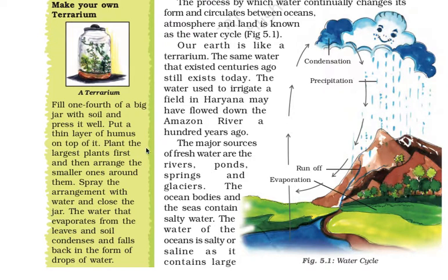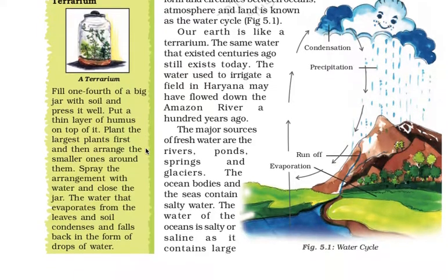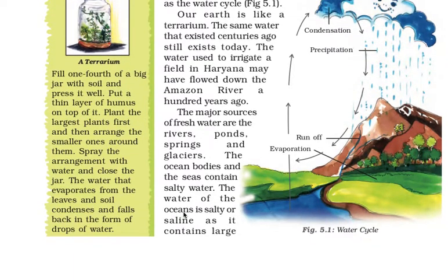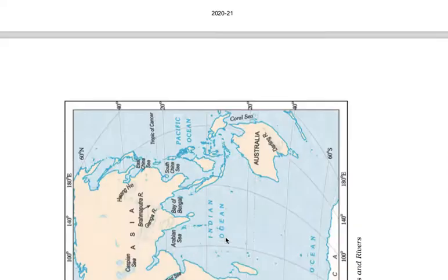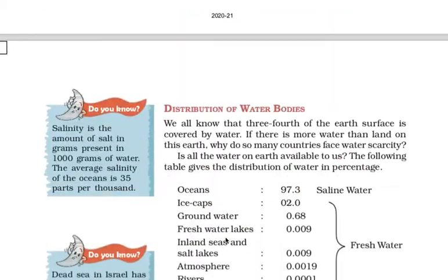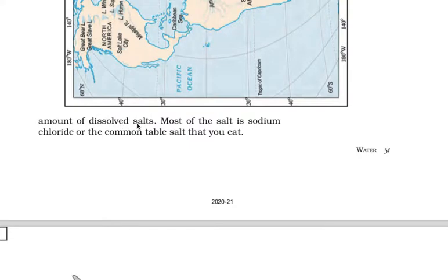The major sources of fresh water are rivers, ponds, springs and glaciers. The ocean bodies and seas contain salty water — the water of the oceans is salty or saline as it contains a large amount of dissolved salt.